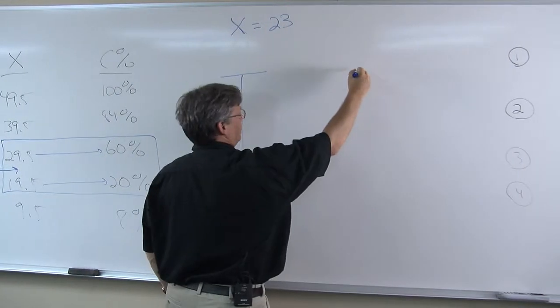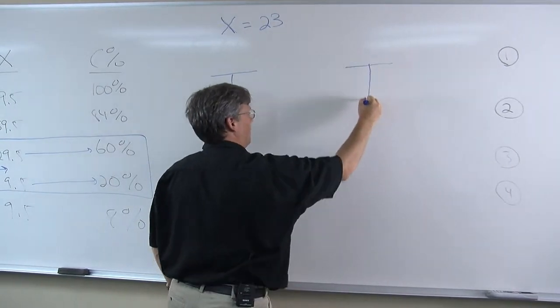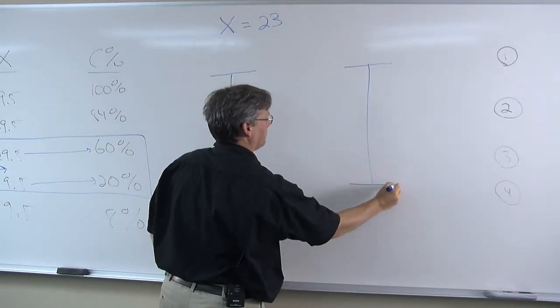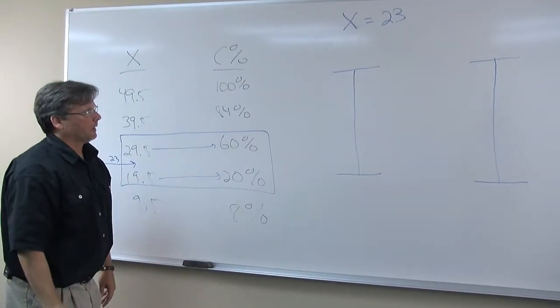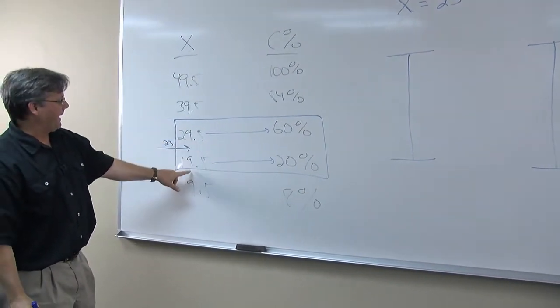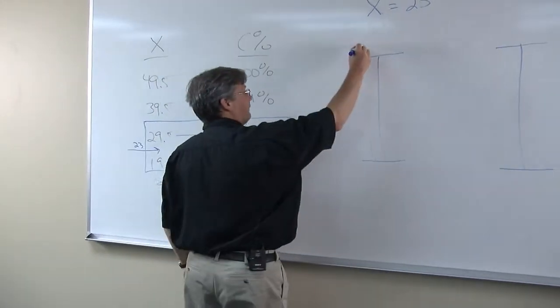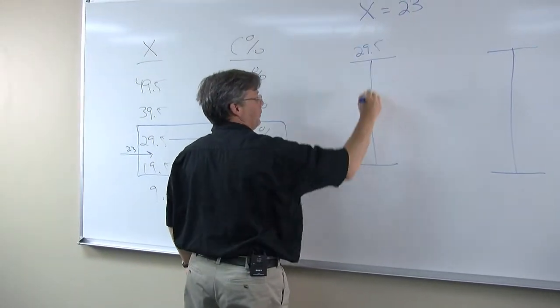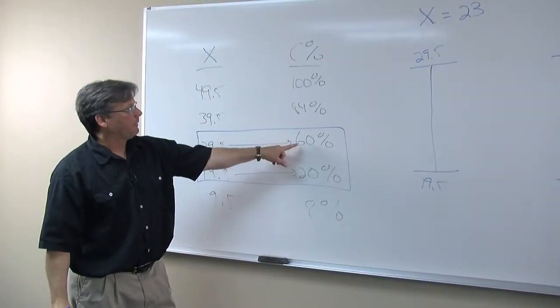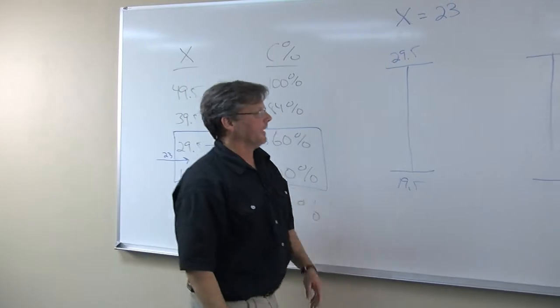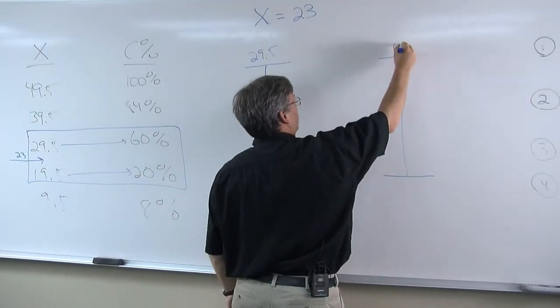These are going to help us to visualize the two intervals and the locations inside the intervals and find the missing number. In our X score scale, we have a top of 29.5, a bottom of 19.5. And then we go over to the cumulative percentage side. We have 60% and 20%. Kind of clean numbers for you to work with.